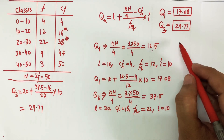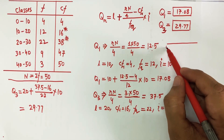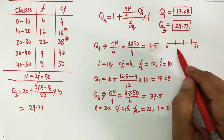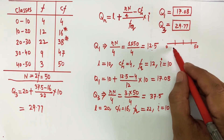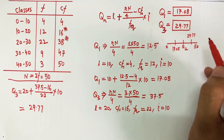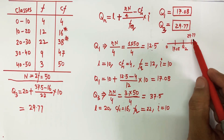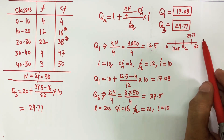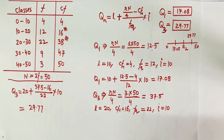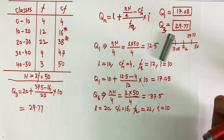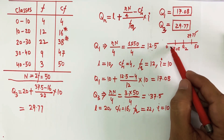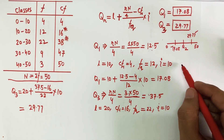Diagrammatically, these are the marks of all students ranging from 0 to 50. The first quartile Q1 is at 17.08, somewhere in between comes the second quartile, and the third quartile Q3 is at 29.77. Since quartiles divide the data into four equal parts, 25% of 50 is about 12.5, so approximately 13 students score above 29.77 marks and approximately 13 students score below 17.08 marks.